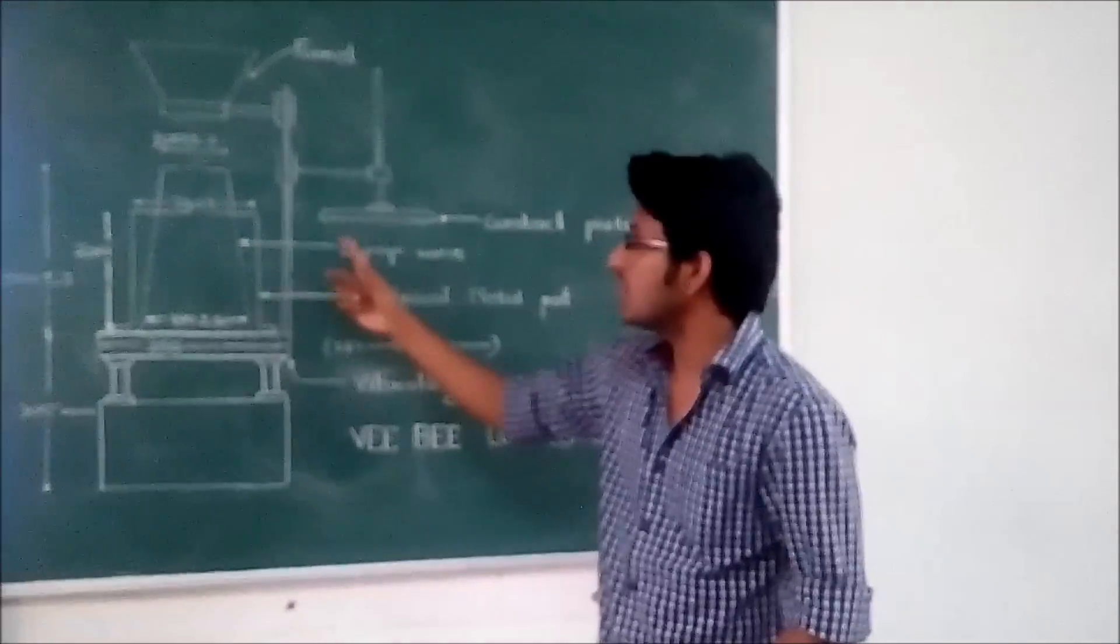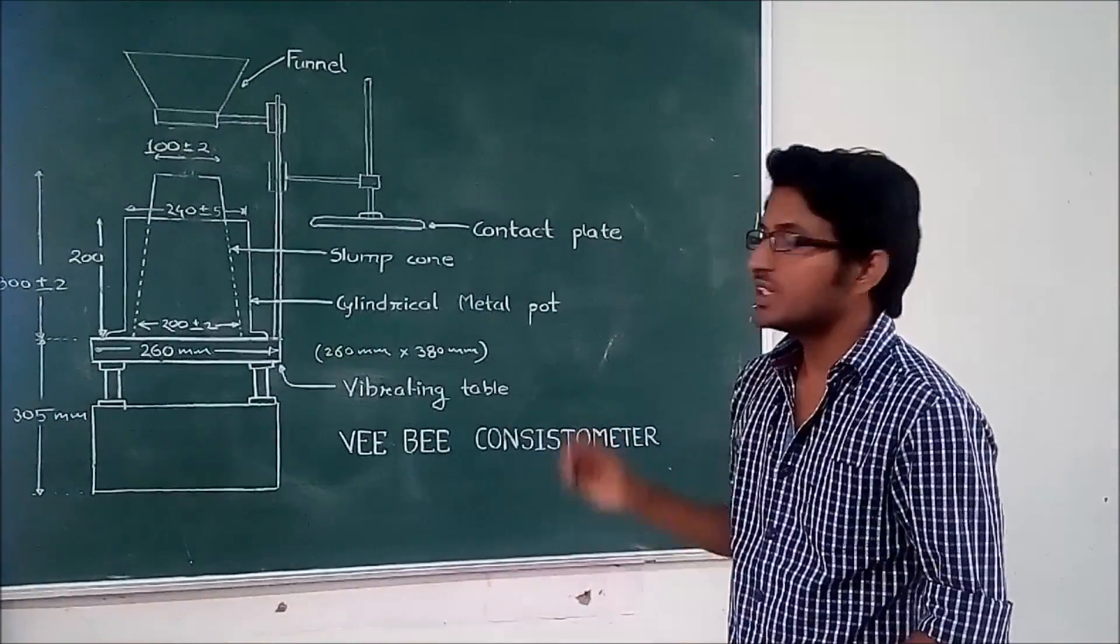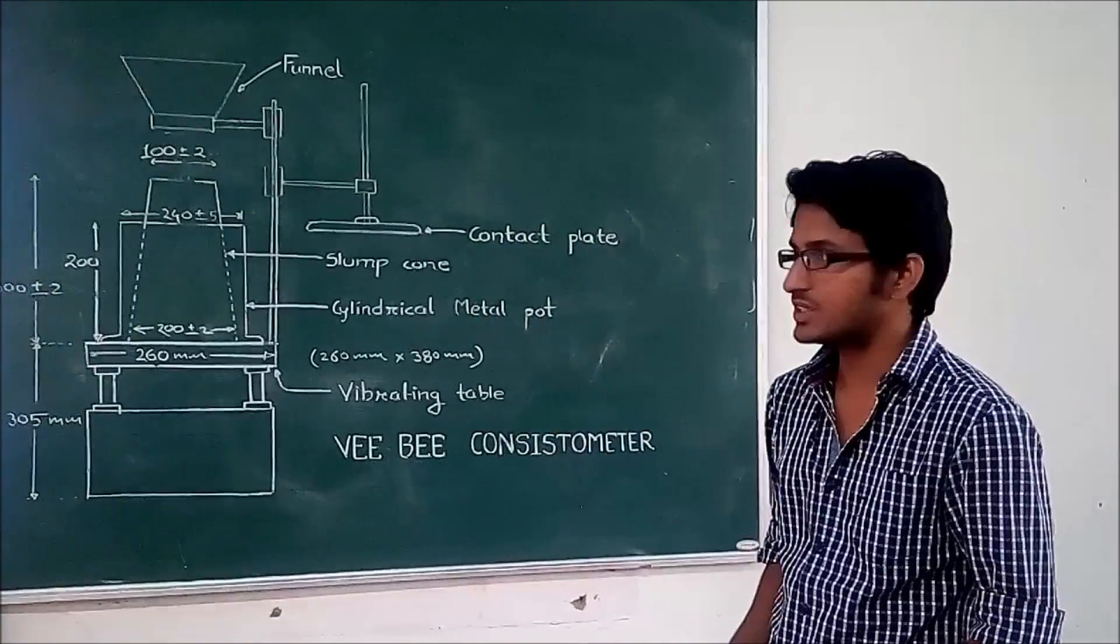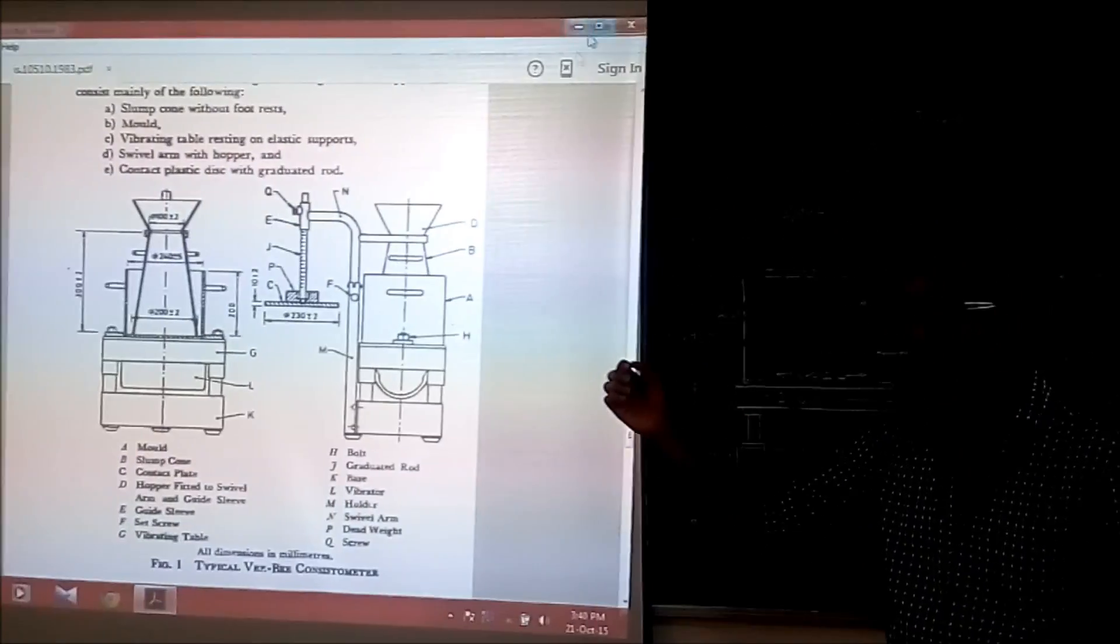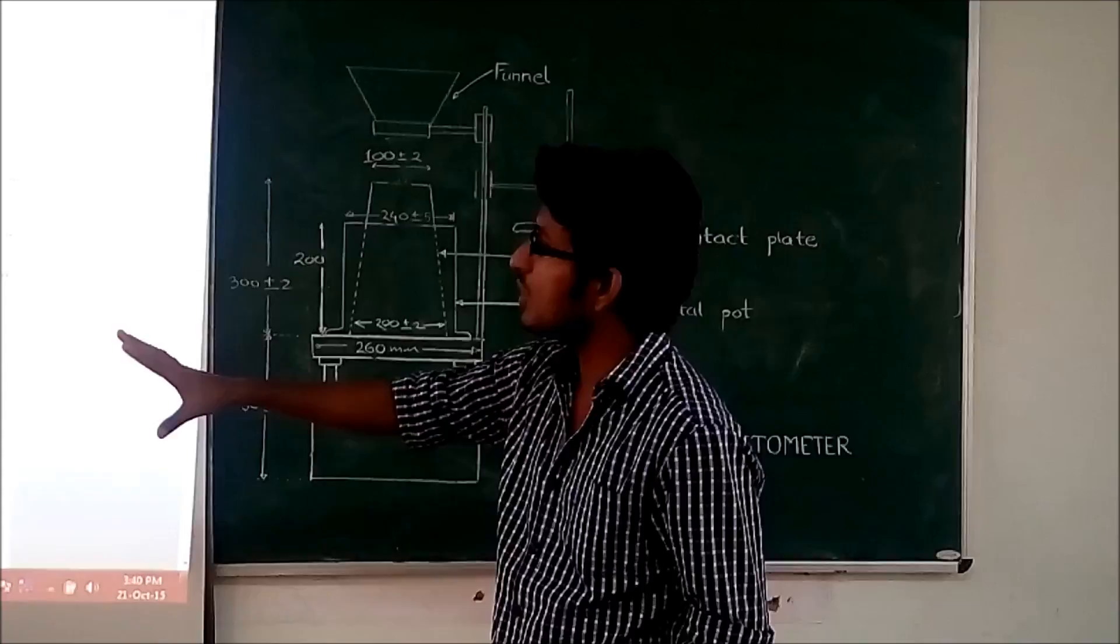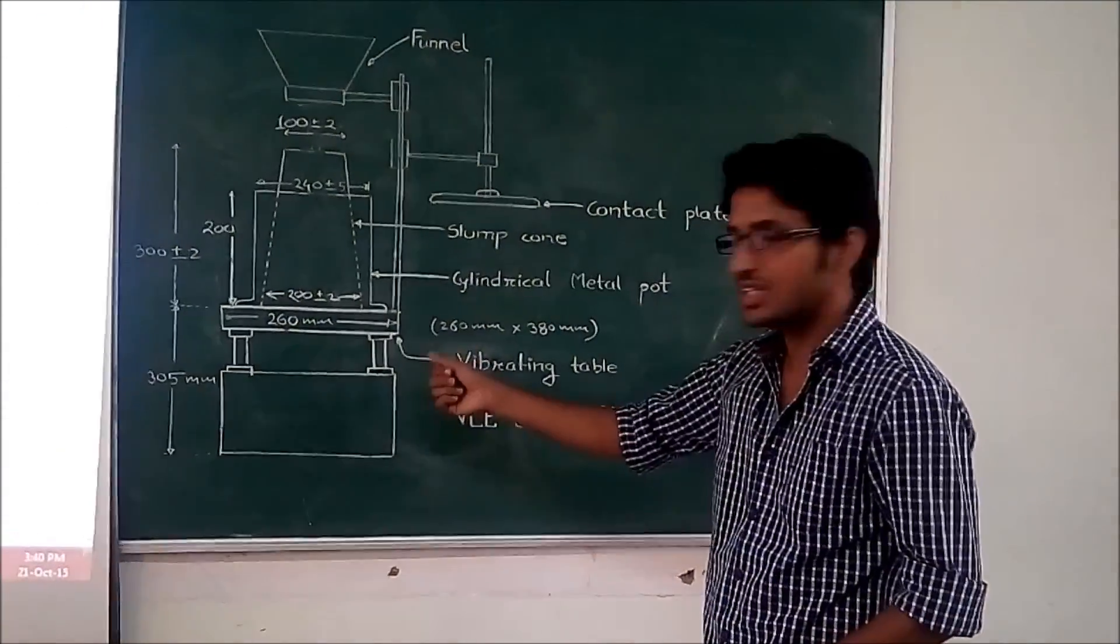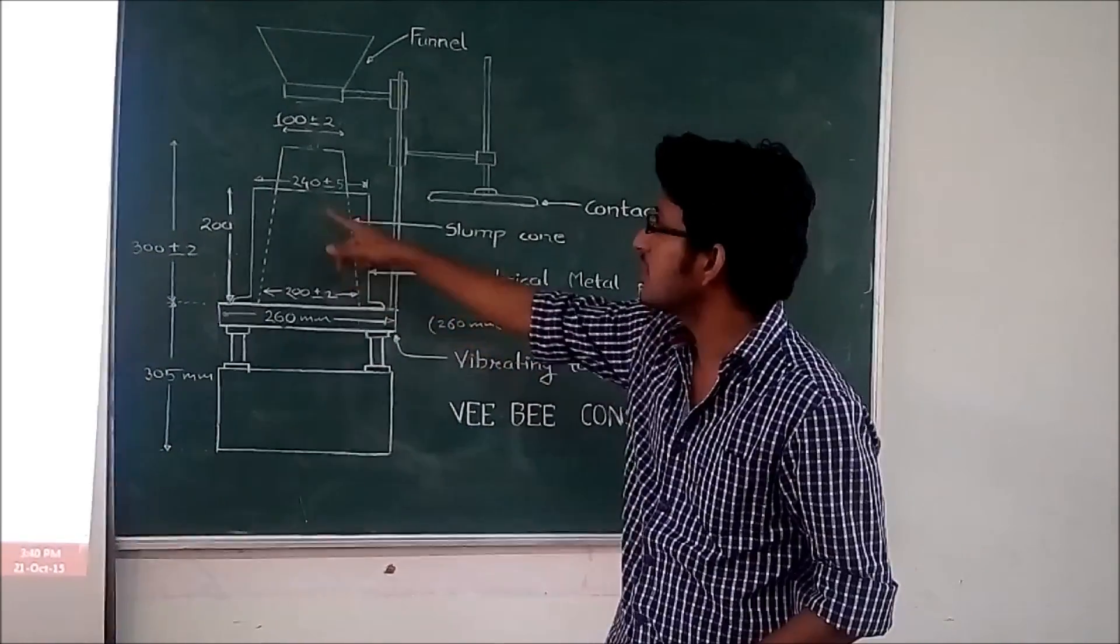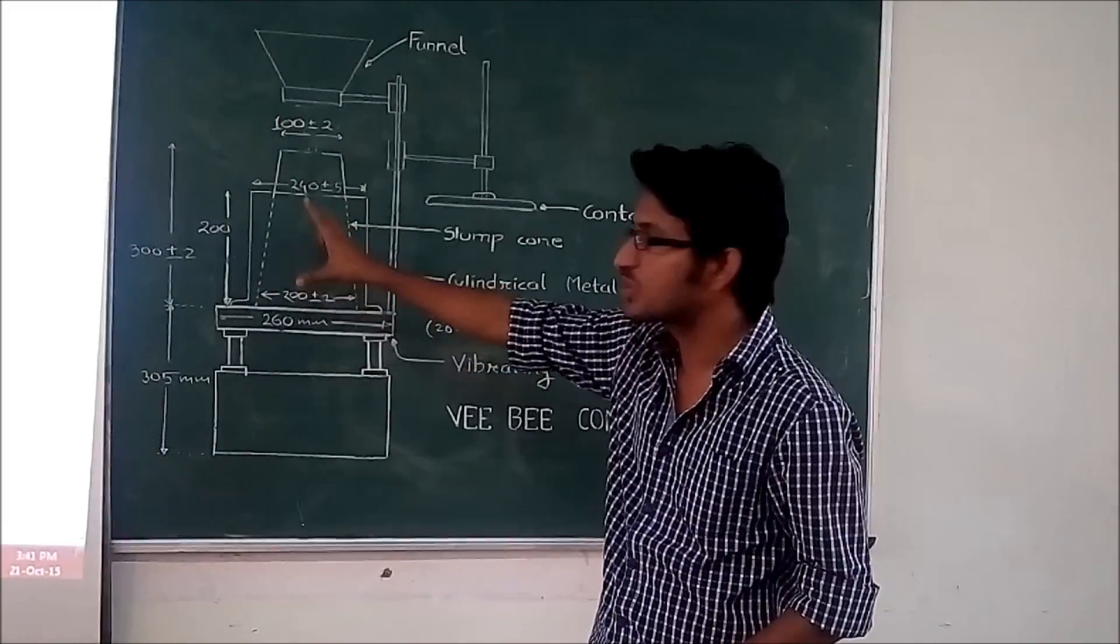then cylindrical metal mold, slump cone and standard tamping rod. Now all the detailed technical specifications are mentioned in IS 10510. According to this IS code, the maximum size of aggregate that we can use is only 40 mm. Then it defines all the dimensions like this vibrating table. Its dimension is 380 mm into 380 mm. Then cylindrical metal part. Its diameter is 240 mm plus minus 3 mm and its height is 200 mm.